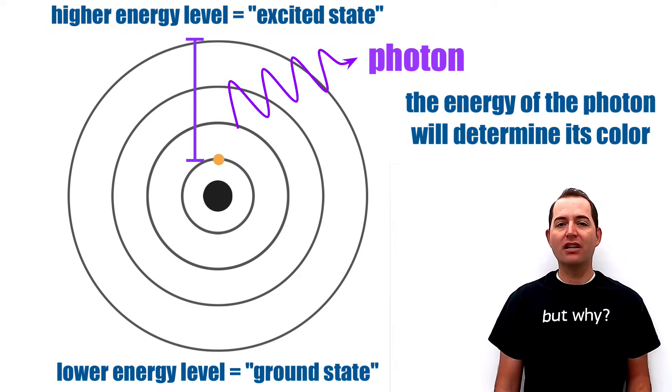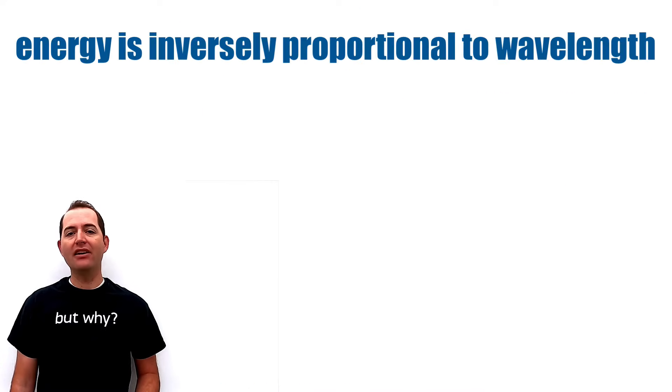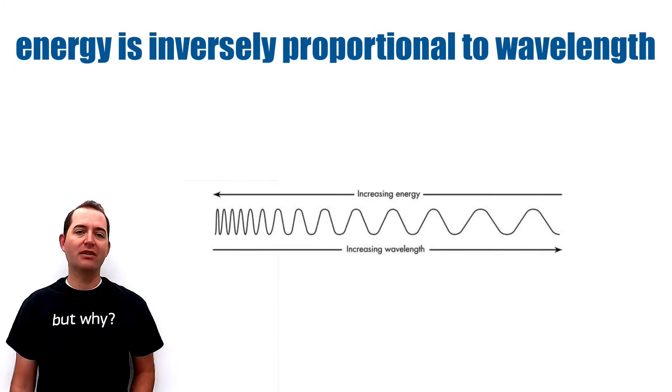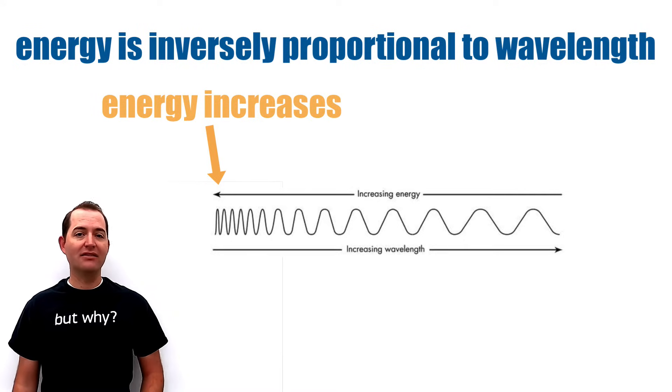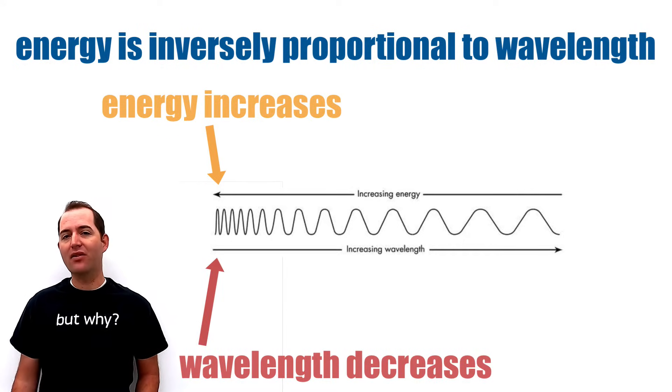The energy of the photon also determines its color in the visible spectrum of light. For all light, the energy of the photon is inversely proportional to the wavelength or color of light. As the energy of the photon increases, the wavelength decreases or becomes shorter.